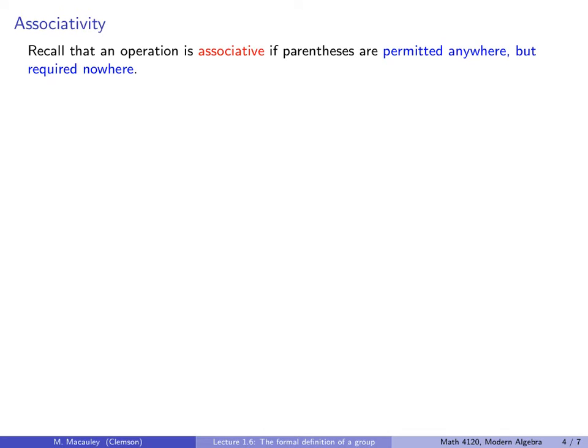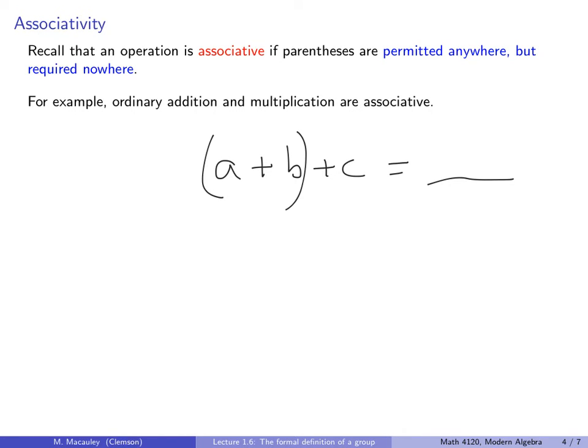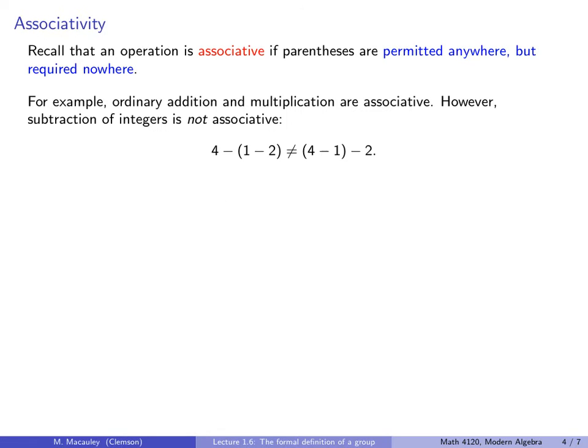There are some more subtle requirements as well. Recall that an operation is associative if parentheses are permitted anywhere but required nowhere. I think that's the best way to define what it means to be associative. For example, ordinary addition and multiplication are associative. Because you can write A plus B plus C equals whatever it is. So parentheses are permitted anywhere but required nowhere. In other words, I can put my parentheses there and that doesn't change the outcome, or I could have put my parentheses somewhere else. However, subtraction of integers is not associative, because 4 minus 1 minus 2 is not the same as 4 minus 1 minus 2.